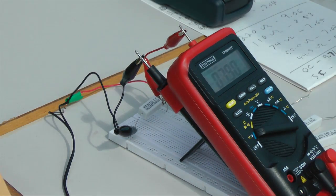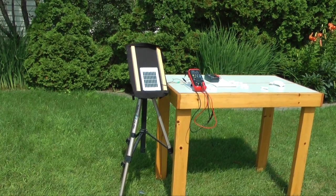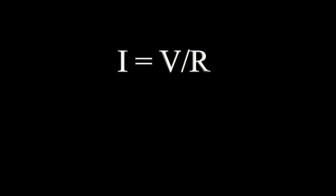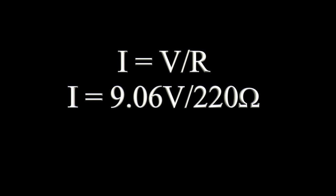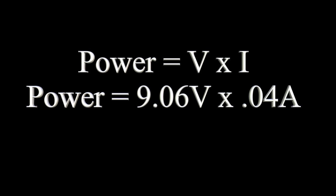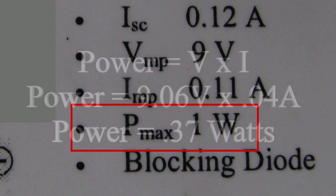In direct sunlight, we get a reading of 9.06 volts with a 220 ohm resistor. Let's calculate the power output of this system. Using Ohm's law, current equals voltage divided by resistance — that's 9.06 divided by 220, giving a value of 0.04 amperes. Power in watts is voltage times current: 9.06 times 0.04, which equals 0.37 watts — only one-third of the rated value of the panel.